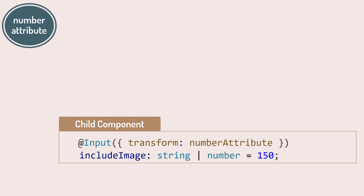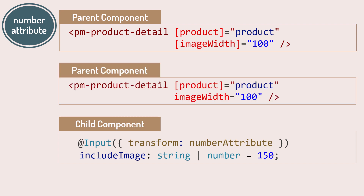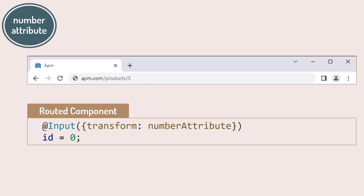We use the built-in numberAttribute transform function to support HTML attributes, so the parent component has the option to use standard input binding or use an HTML attribute for a numeric value. The numberAttribute is also useful when reading route parameters — we use it to transform a route parameter, which is always a string, to a numeric value to use in the component.